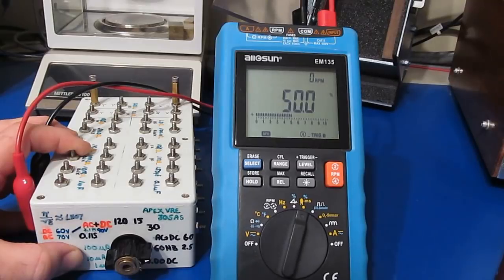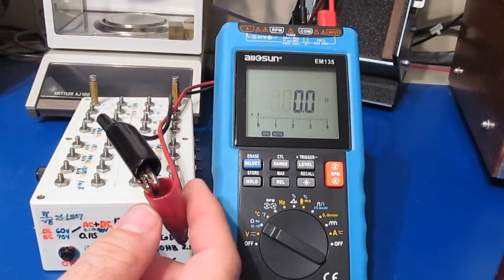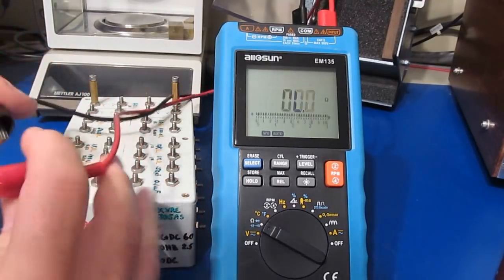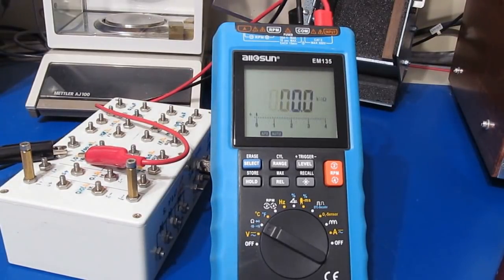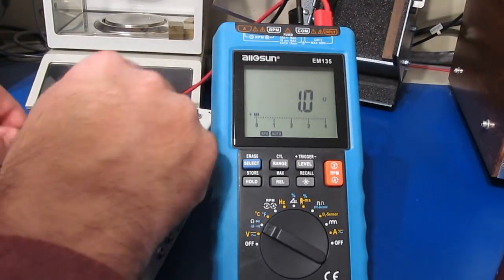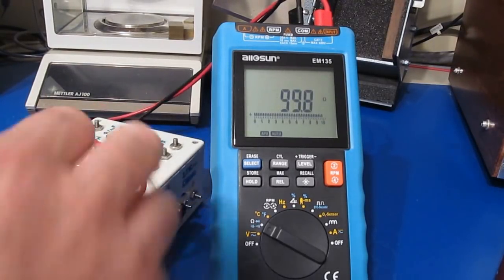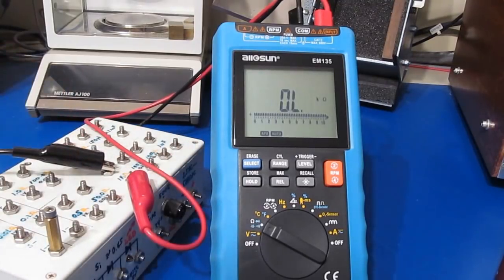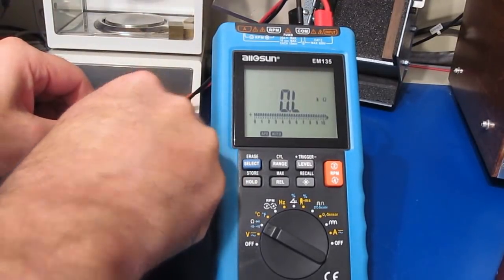Resistance testing with open leads and a short shows no issues. Testing with a 1-ohm 1% resistor, 100 ohms, 1k ohm, and 10 megaohm resistor all show accurate readings.